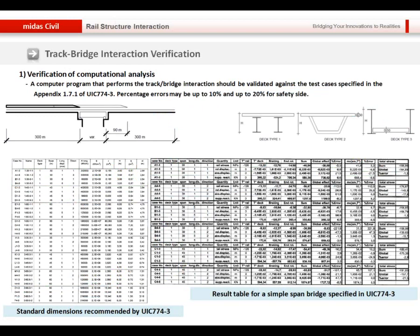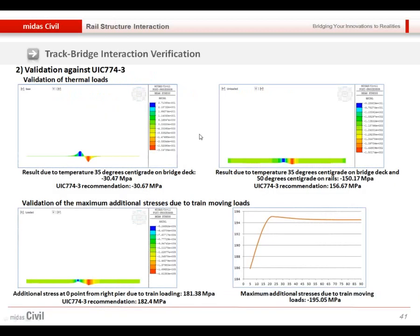After we implemented this module, the rail track interaction module, then we had full verification. And we have compared the results with the recommended value of the UIC, which is the International Railway Bridge Standard. And we had the satisfied agreement with this UIC recommended results. So those are the verifications.